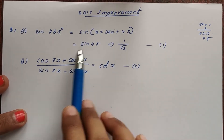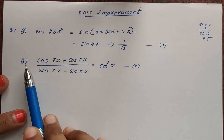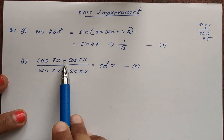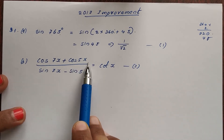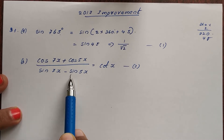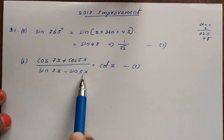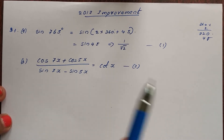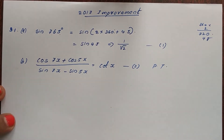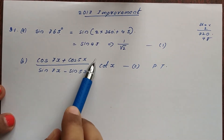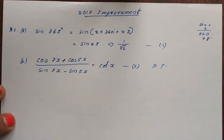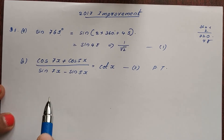Next question: cos 7x plus cos 5x divided by sin 7x minus sin 5x is equal to cot x. Now let's prove that. We will apply the CD formula.